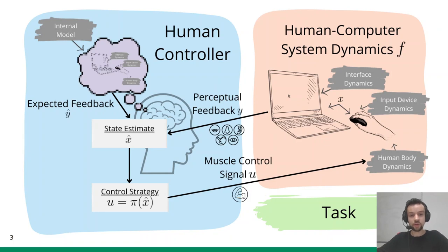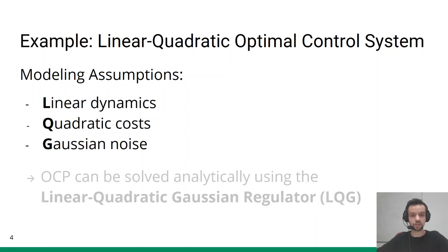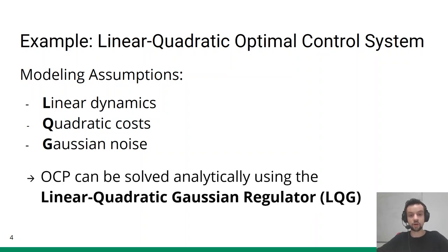So in summary, we model human interaction as a solution to a task-specific optimal control problem. Given the infinite number of possible muscle control signals that humans can apply at every single time step, and given that only a small subset of these controls leads to reasonable body movements, solving this problem is very hard in general. However, for a particular subset of optimal control problems, a unique solution exists which can be computed analytically. These are the optimal control problems with linear dynamics, quadratic costs, and Gaussian noise, which can be solved using the linear quadratic Gaussian regulator.